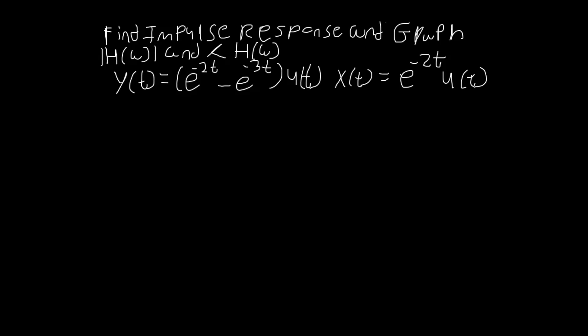Hello, my name is Michael Roberts, and today I will be finding the impulse response and graphing h of omega and the angle of h of omega. We are given an input-output pair: the input being e to the negative 2t times u of t, and the output being the quantity of e to the negative 2t minus e to the negative 3t, times u of t.